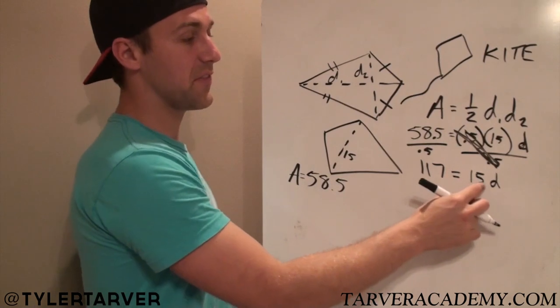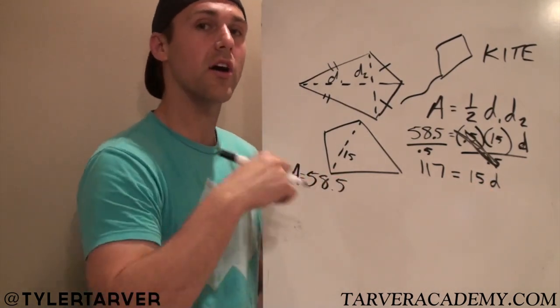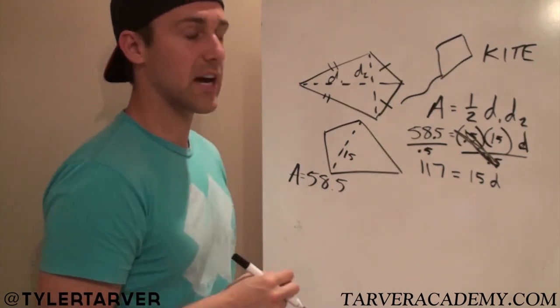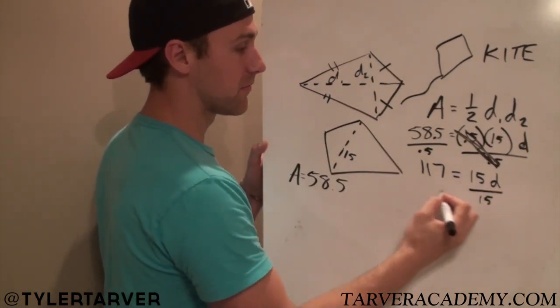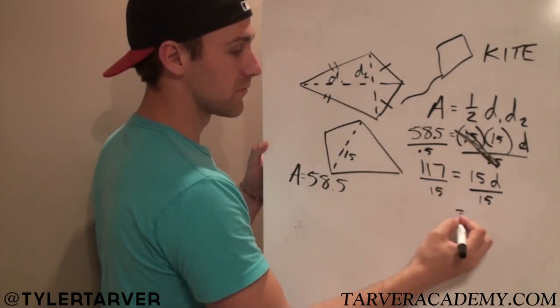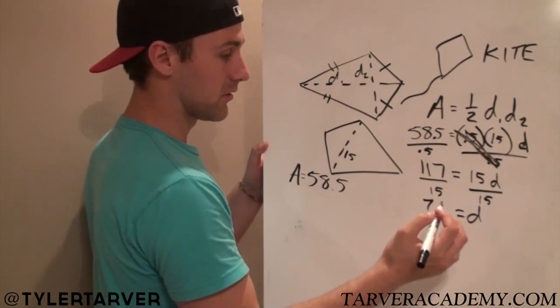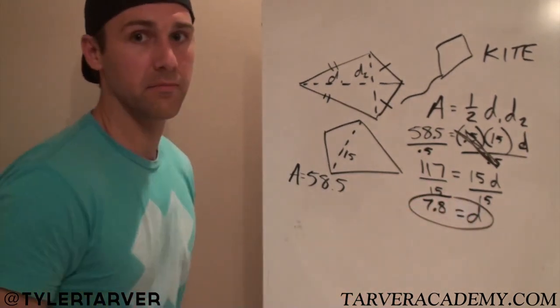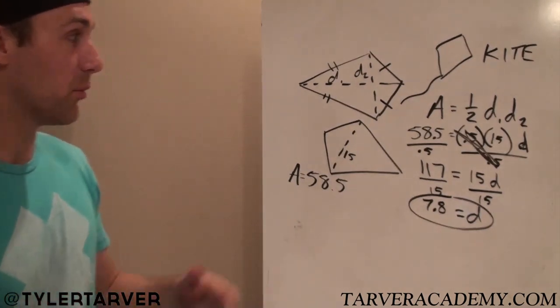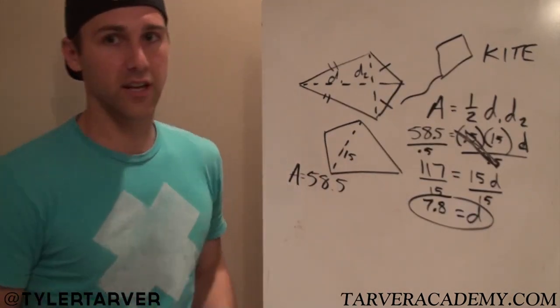Okay? Next, last thing we're going to get rid of, you've got 15 times D. Remember, to get rid of stuff on that side of the equal sign, you do the opposite. What's the opposite of timesing by 15? Dividing by 15. Our other diagonal is, what is that, 7.8? Sure. 7.8. That's the measurement of other diagonal, which is what they would have asked for if they would have given you the area already, and they gave you the diagonal.